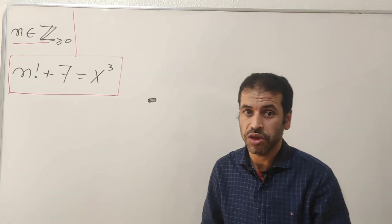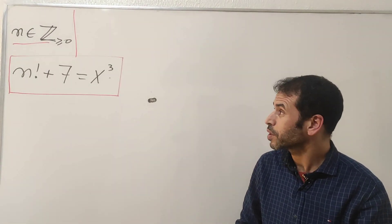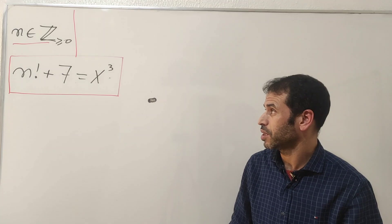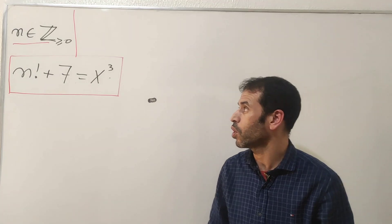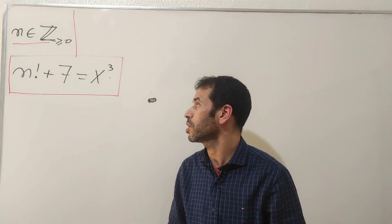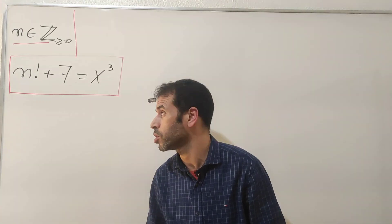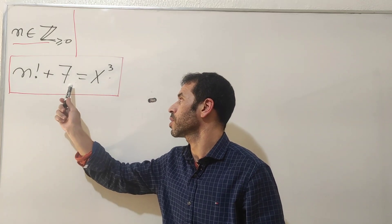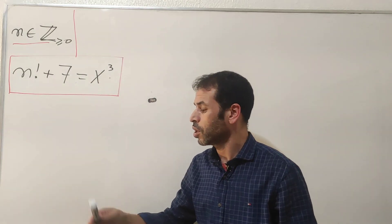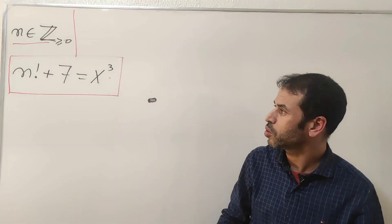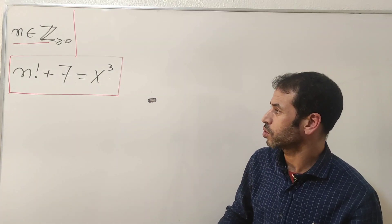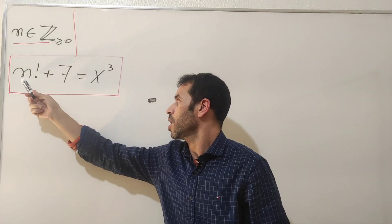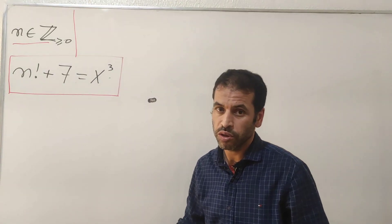In today's video, here is a nice and quick problem regarding arithmetic and number theory. The statement is: for all n as non-negative integers satisfying the equation n factorial plus seven equals x cubed, we are going to determine the solution for this equation as a pair (n, x).